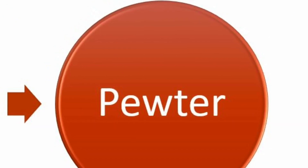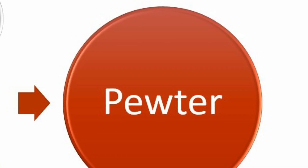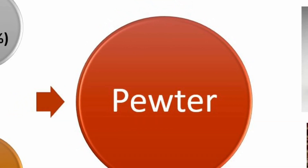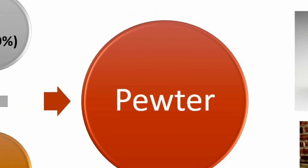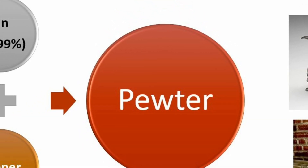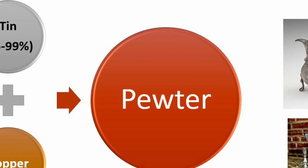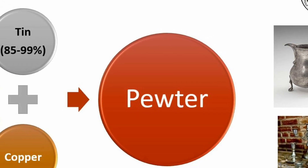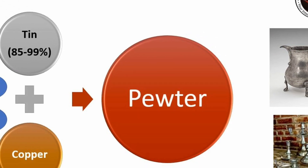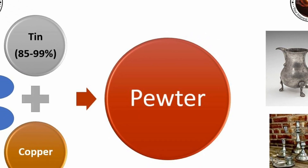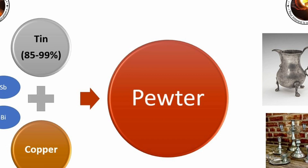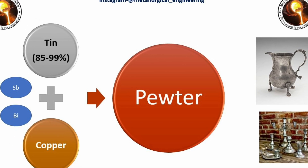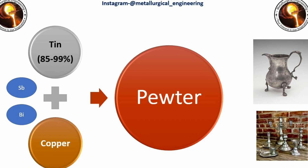Next is pewter. It is a tin-based alloy and copper is the main alloying element. Other alloying elements are antimony and bismuth. The composition of pewter is 85 to 99 percent tin. It is used in making decorative plates and vases.